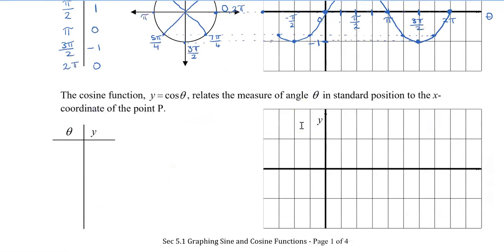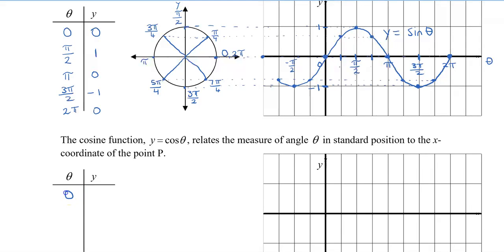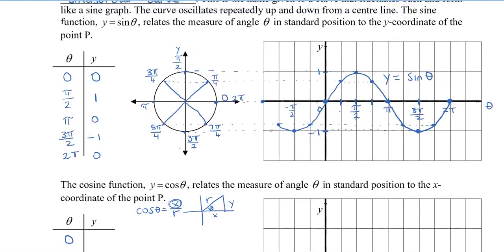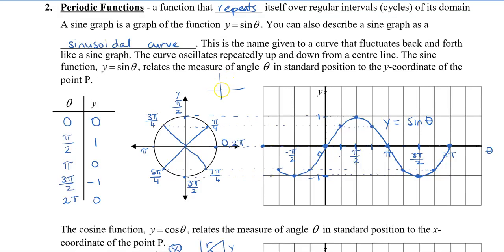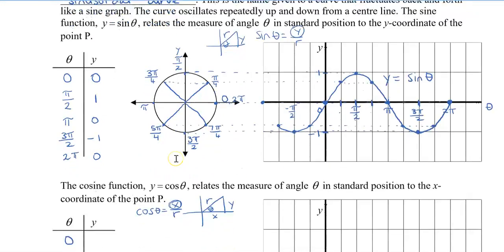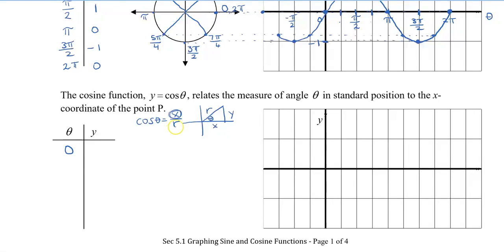Now let's look at cosine as well. Recalling our triangle, if we have theta, this is our x, this is our y, and this is our hypotenuse — our radius r. Cosine theta is x over r, so when we talk about cosine theta, we're looking at the x value. Going back, sine theta is y over r, so for sine we only look at y values of the circle. For cosine, we want to look at the x values.